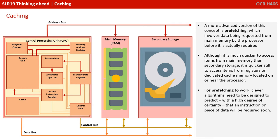A more advanced version of this concept is prefetching, which involves data being requested from main memory by the processor before it's even actually required. Although it's much quicker to access items from main memory than secondary storage, it's far quicker still to access items from registers or dedicated cache memory located on or near the processor. Of course, for prefetching to work, clever algorithms need to be designed to predict with a high degree of certainty that an instruction or piece of data will soon be required.